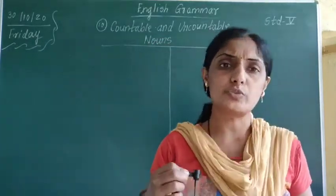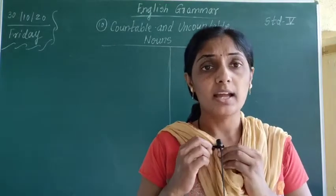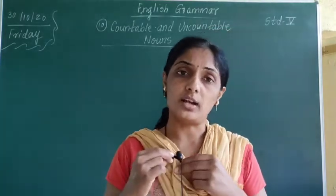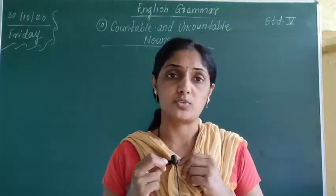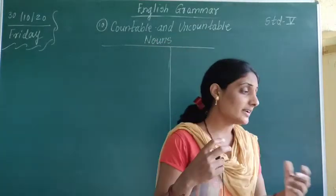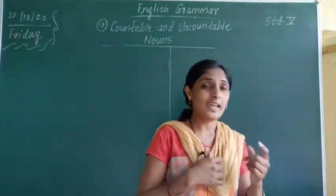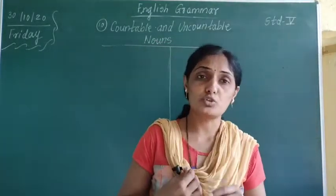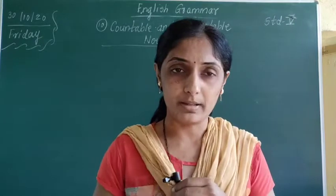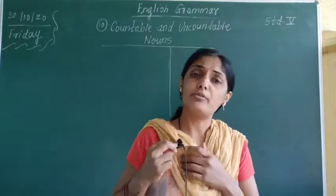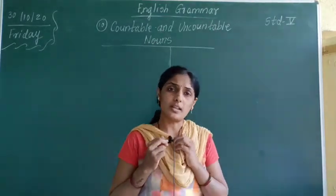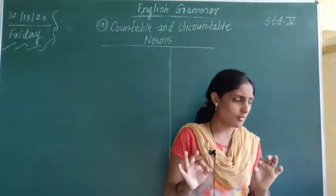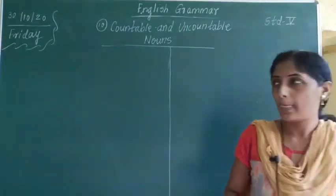The nouns which we can count are called countable nouns, and the nouns which we cannot count are uncountable nouns. We studied that A and AN articles are used before countable nouns. And before uncountable nouns, A and AN articles are not used.